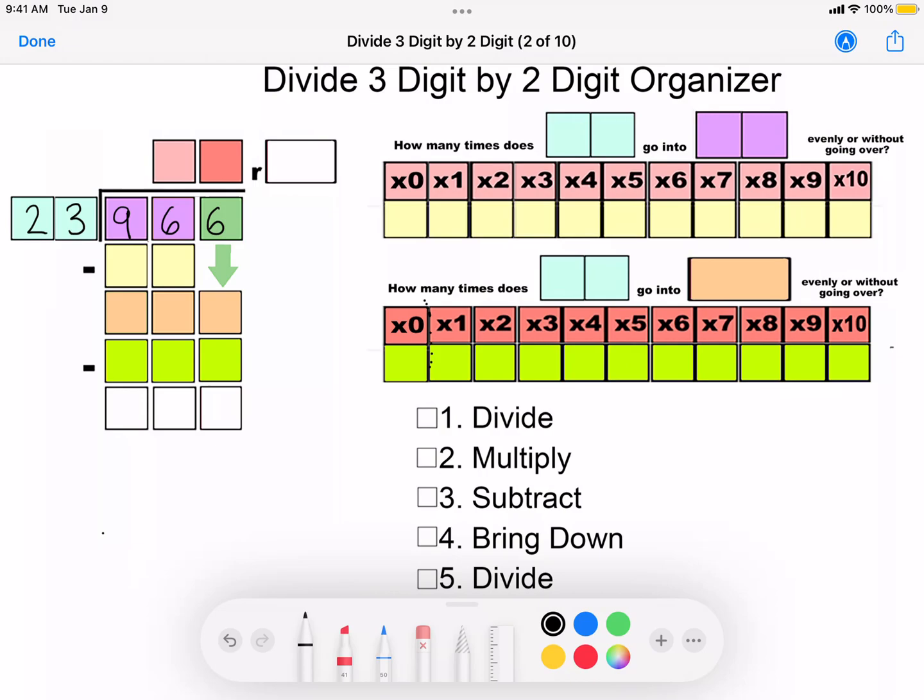How many times does 23 go into 96 evenly or without going over? We use our chart: 23, 46, 69, 92. 115 is too much.